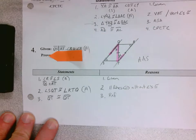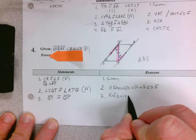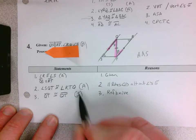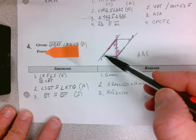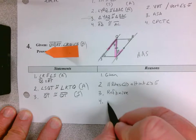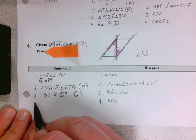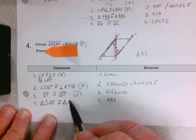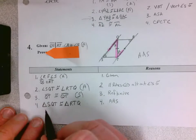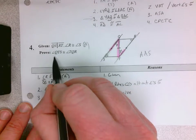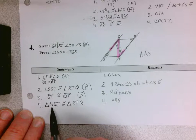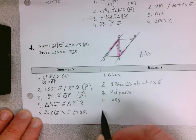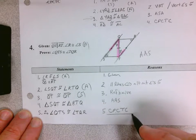QT is congruent to QT — that's the reflexive property. You remember reflexive by thinking about what you see when you look in a mirror: yourself. That's a side. I have either angle-side-angle or angle-angle-side — be careful, those are the confusing ones. This is angle-angle-side because the side is not in between. So triangle SQT is congruent to triangle RTQ — be careful, those letters reverse. Then by CPCTC: angle QTS is congruent to angle TQR. CPCTC always follows a congruent triangle statement.